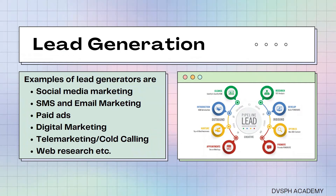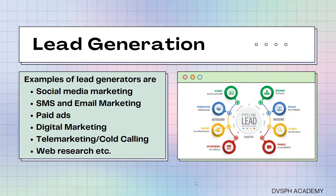Telemarketing and cold calling — these are old-school lead generation methods. But until now, many businesses still use them because the good thing with telemarketing and cold calling is you can get the motivation of the prospect right away. With other non-voice lead generation, you can't determine if they're really interested because you haven't talked to them by phone — they just send a message or show interest digitally. And that's where web research comes in — we search for information on the internet that we can contact by call, email, text, or whatever, as part of the client's marketing campaign.